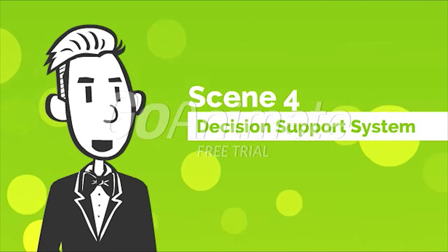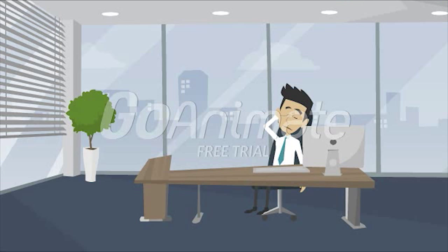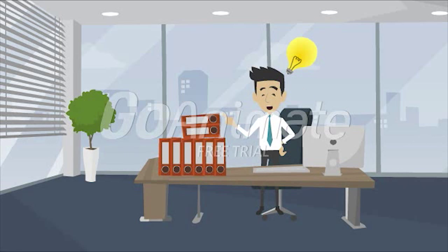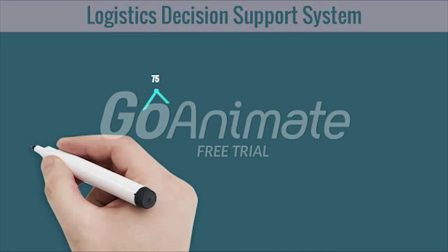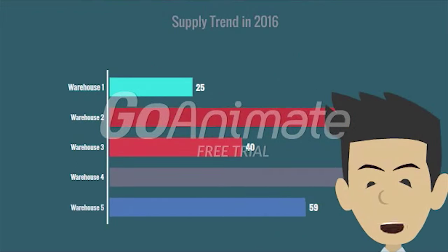Let's continue with the fourth system: Decision Support System. Two years later, James gets promoted to senior manager. He is now even busier than ever as more and more work needs to be completed every day. He realized: why not use the decision support system? This system uses a model base and provides access to a number of different models to support decision making. Many of these models consist of statistical analysis of data and can serve as guidelines for certain decisions. With decision support system, he is now able to analyze and determine existing data while also predicting trends in the future.